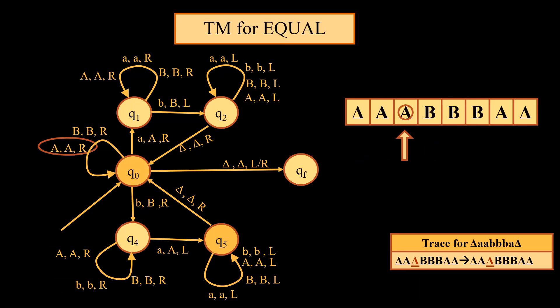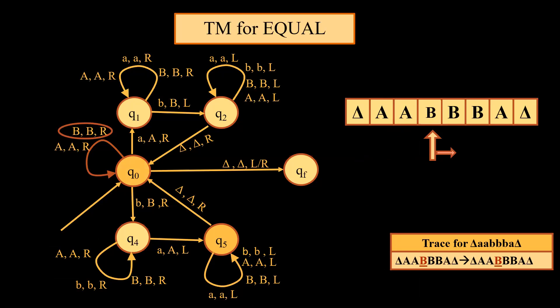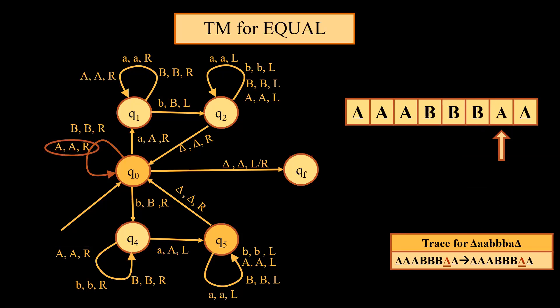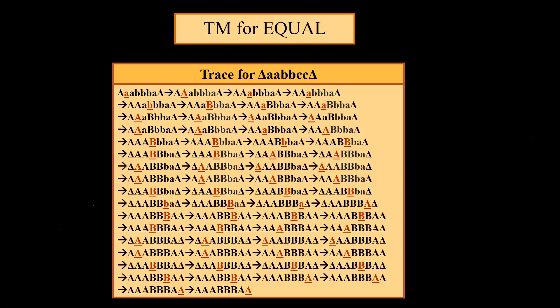When traversing in this scenario, we find that there are no inputs left to be converted into their capital counterparts. That means all small a's have been converted into capital A and all small b's have been converted into capital B, and we reach the end of the tape, which is delta. The moment we reach the end of the tape while at state Q0, we move to state Qf by having a transition delta delta left/right. This is the complete trace for the Turing machine for equal.